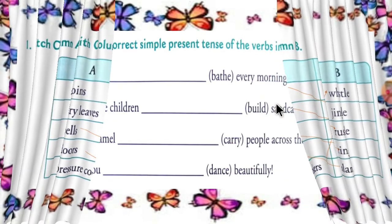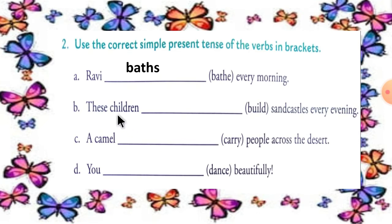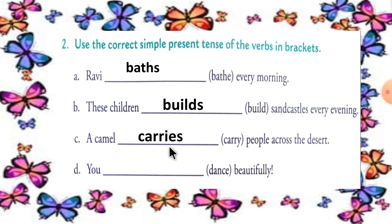Now let's solve the next exercise. Ravi baths every morning. These children build sand castles every evening. A camel carries people across the desert. You dance beautifully.